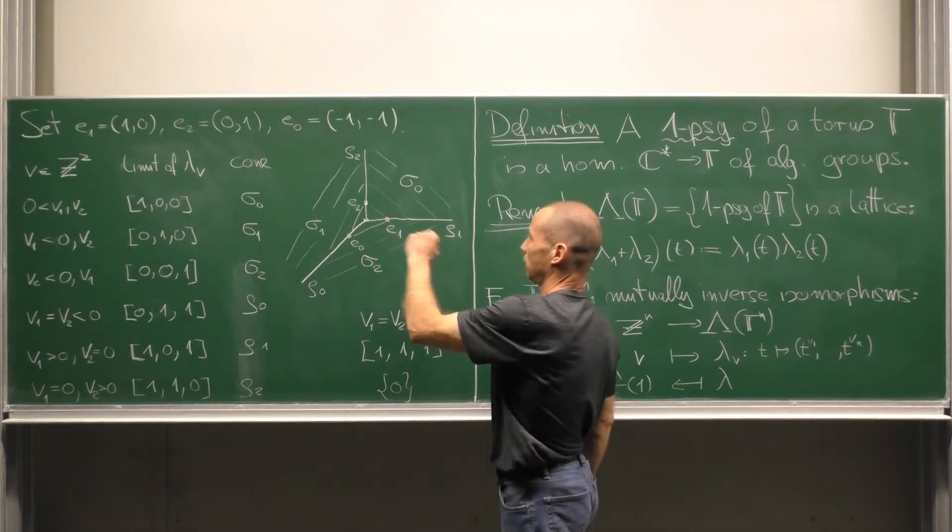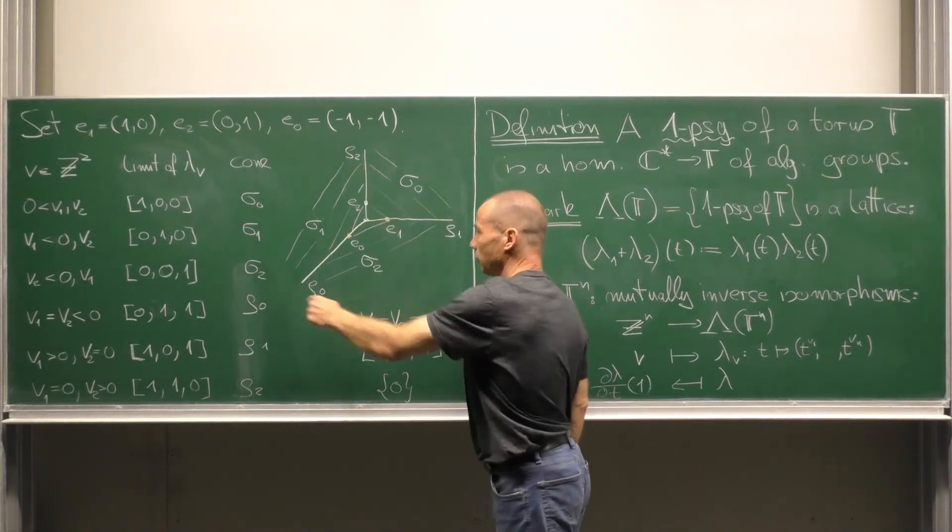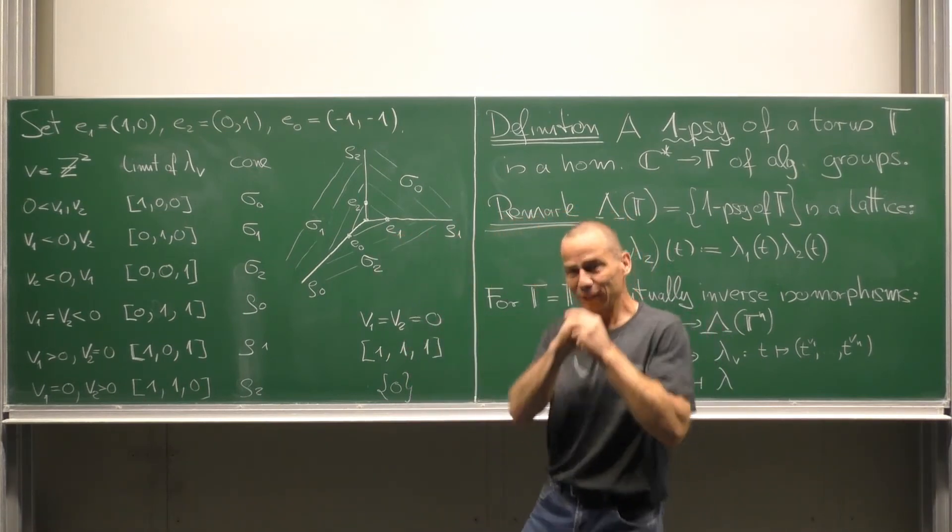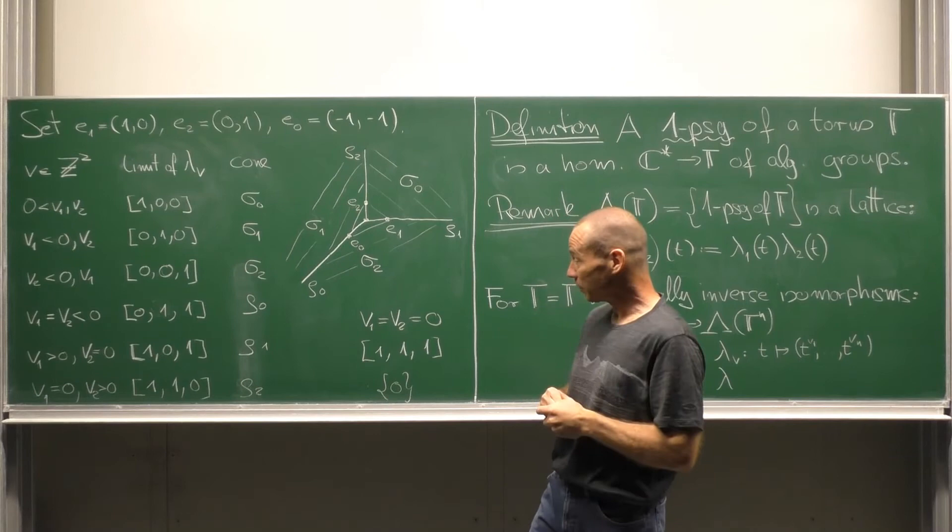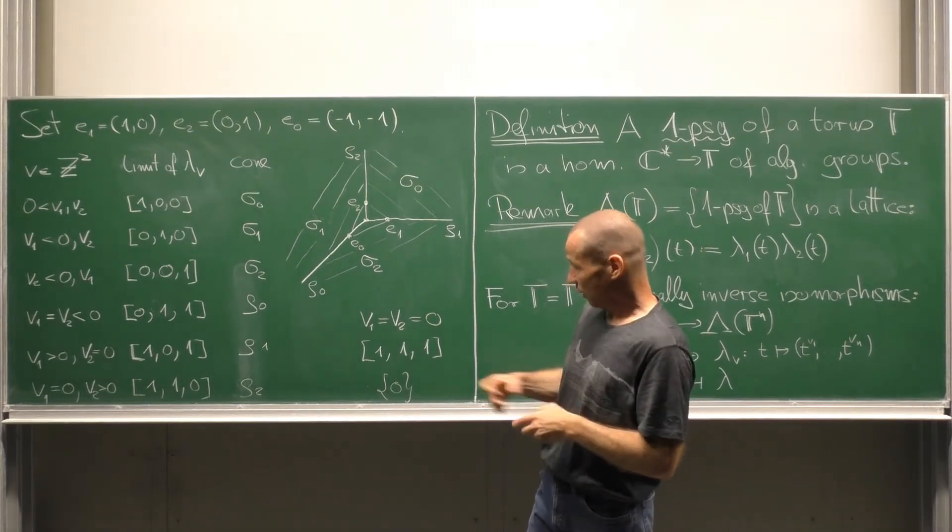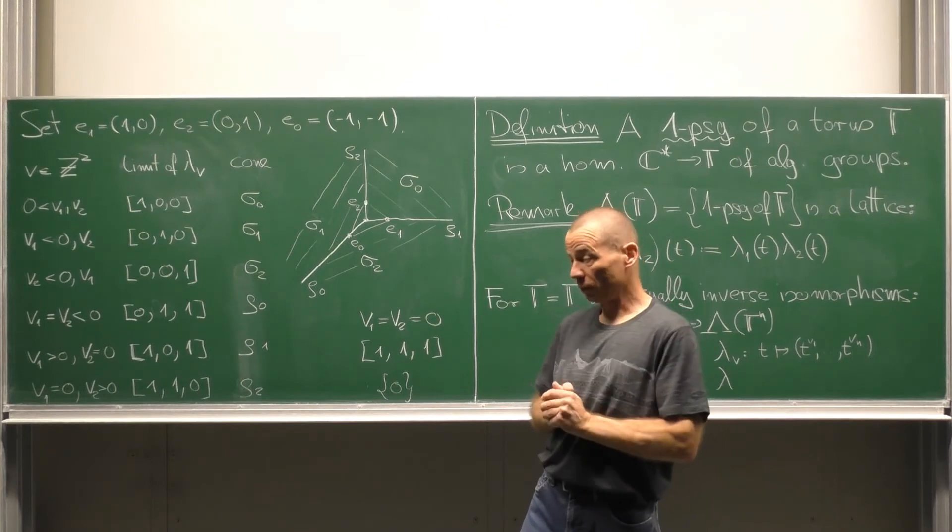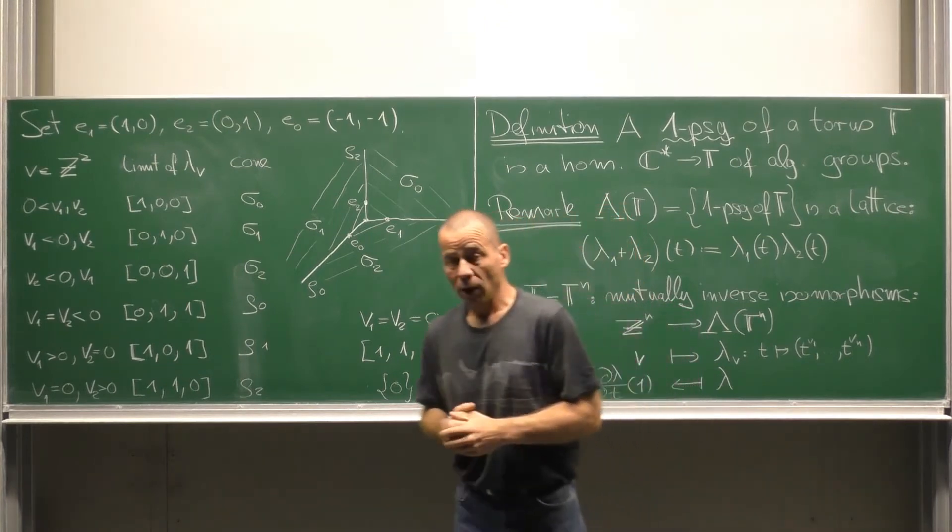And finally, there is one limit point attracting only one parameter subgroup, which only attracts the trivial one parameter subgroup. Okay, let us get a little more formal.